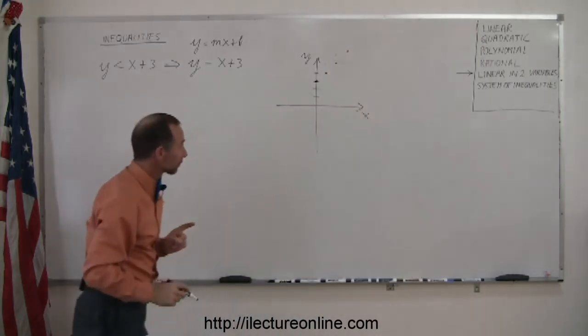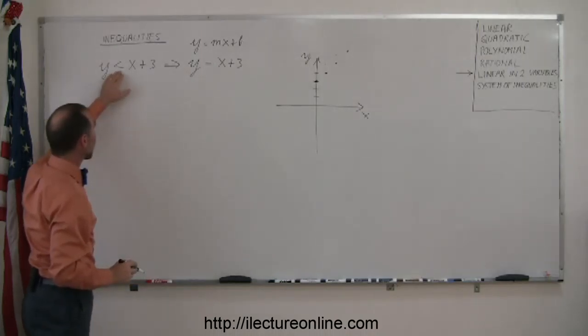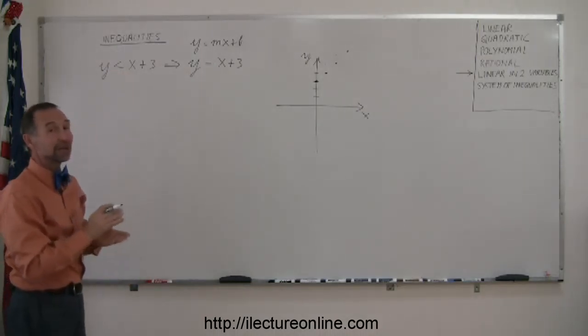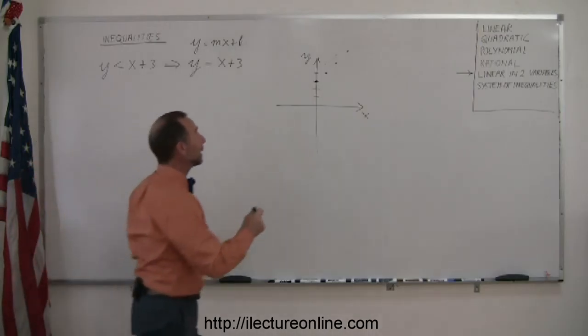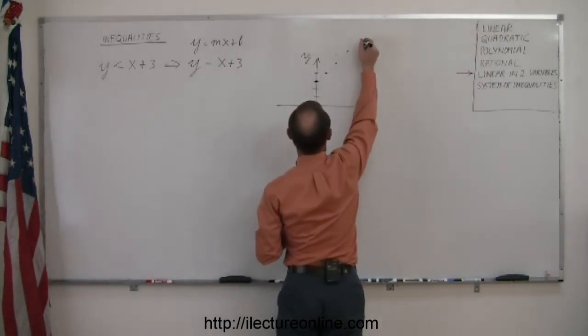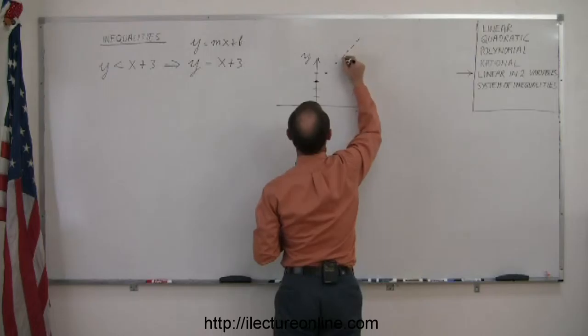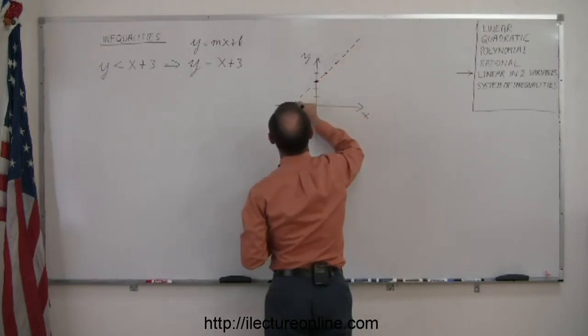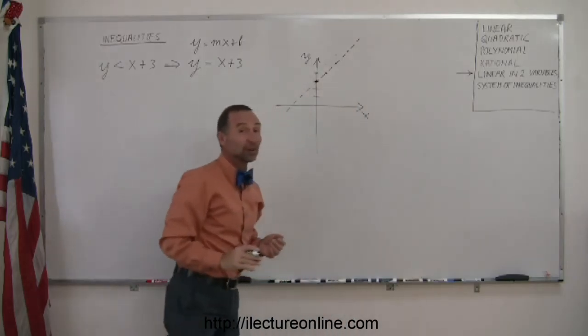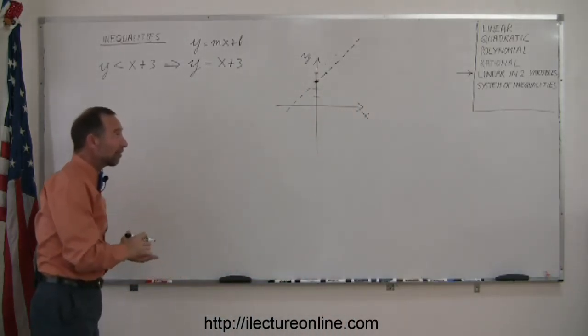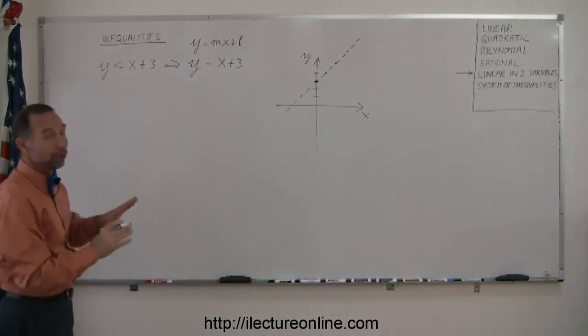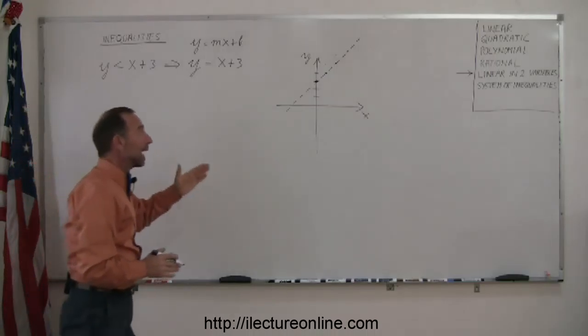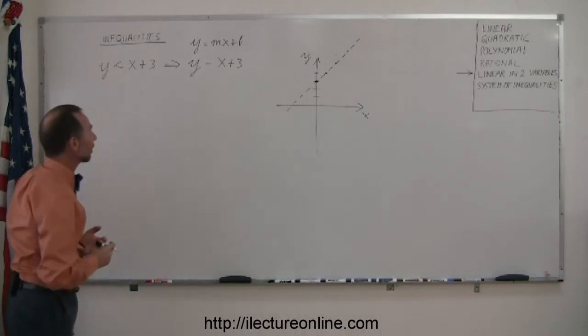Now, be careful here. Since there's not an equal sign here, only a less than sign, that means the boundary is not part of your solution. To indicate that, instead of drawing a solid line, we're going to draw a dashed line. The dashed line indicates that there's the boundary between the region that satisfies the inequality and the region that does not satisfy the inequality. We don't know yet which region it is, but the boundary is not included. So we drew a dashed line.